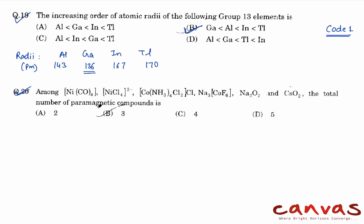We have to find out how many paramagnetic compounds are here. First, if you talk about NiCO4, it is having a tetrahedral structure with sp3 hybridization, zero unpaired electrons. So this is diamagnetic because of the strong field ligand carbon monoxide.